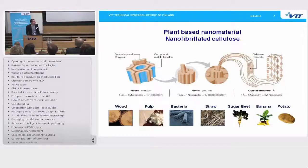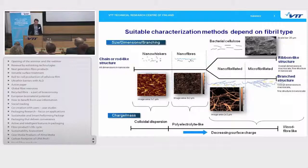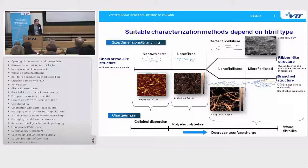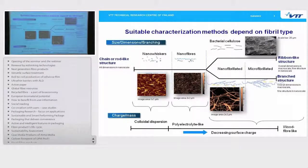Here are different kinds of nanocellulose qualities. We are mainly focused on the right-hand side — the nanofibrillated and microfibrillated cellulose scales. Our overall dimensions are mostly in the microscale, but there are also some fine structures that are in the nanoscale as well.